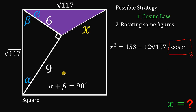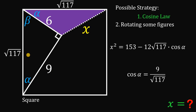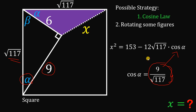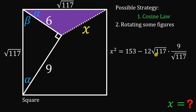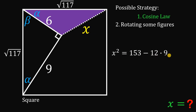To find cosine alpha, we use the right triangle where alpha appears. Cosine equals the adjacent side over the hypotenuse: cosine alpha equals 9 over square root of 117. Substituting back: x squared equals 153 minus 12 times (√117) times (9 over √117). The square root of 117 cancels, giving x squared equals 153 minus 12 times 9, which is 153 minus 108.